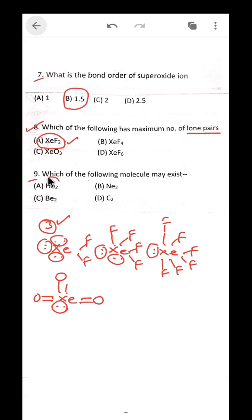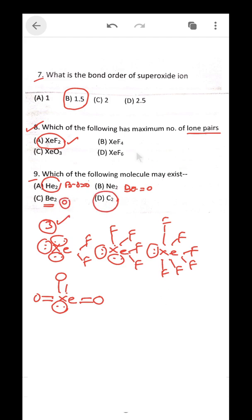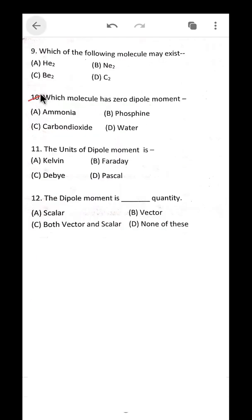Question 9: which of the following molecules may exist? The bond order of He2 is 0, Ne2 is also 0 (noble gas), and Be2 also has bond order 0 — all are monoatomic. However, C2 has a non-zero bond order, meaning it can exist as a molecule. So C2 is the answer.